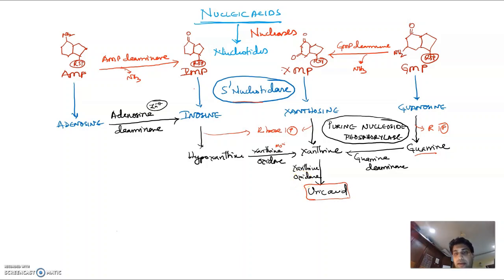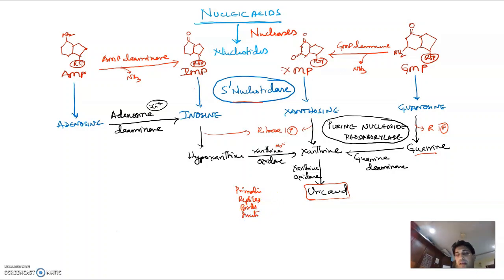This uric acid production as the final end product generally occurs in humans and primates. It also occurs in reptiles, birds, and insects. Other mammals convert this uric acid into allantoin.